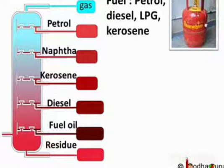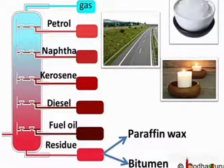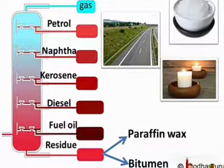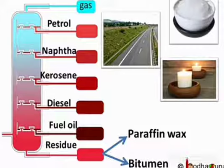We get lots of things from petroleum. We get fuels like petrol, kerosene, diesel, LPG, etc. We get lubricating oil. Paraffin wax, which we get from the residue of the refining process, is used for making ointments, candles, petroleum jelly, face cream, wax, etc. Bitumen, which is also obtained from the residue of the fractional distillation process, is used for making paint and building roads.